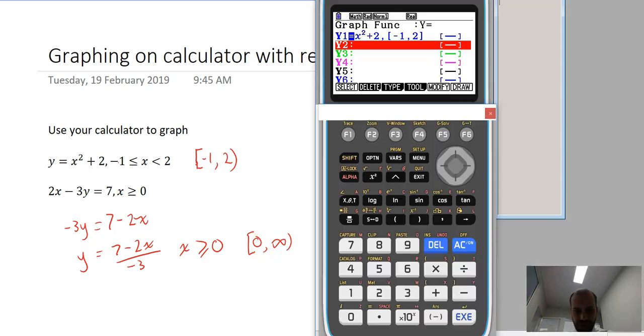Now let's do that on our calculator. I'll use my thingy here. 7 minus 2x over negative 3. Move over here a little bit. Comma. And then square bracket.